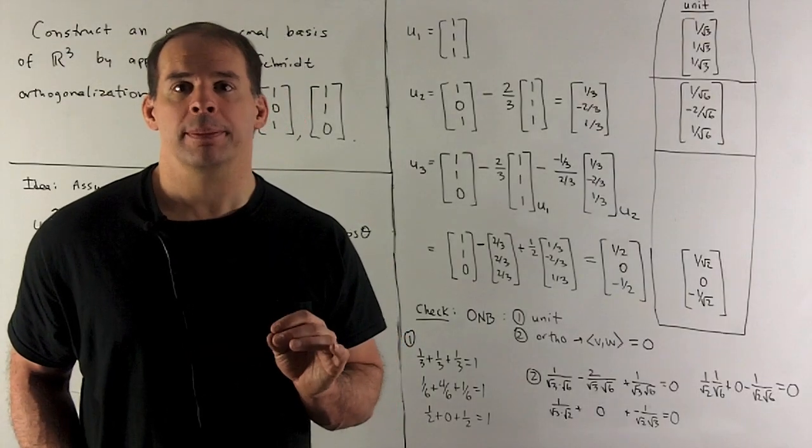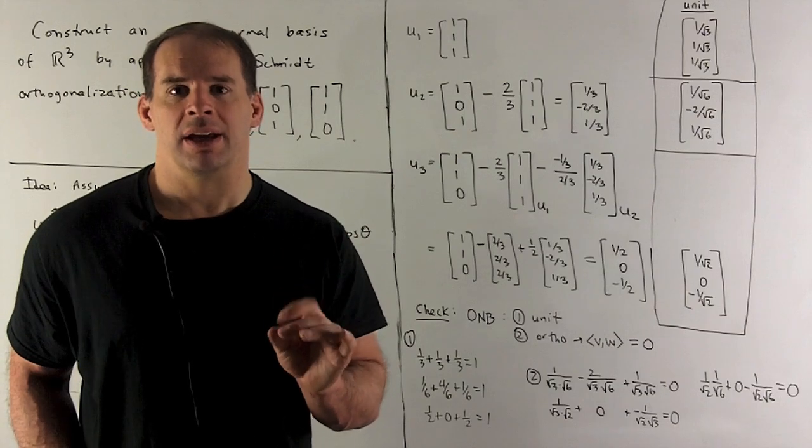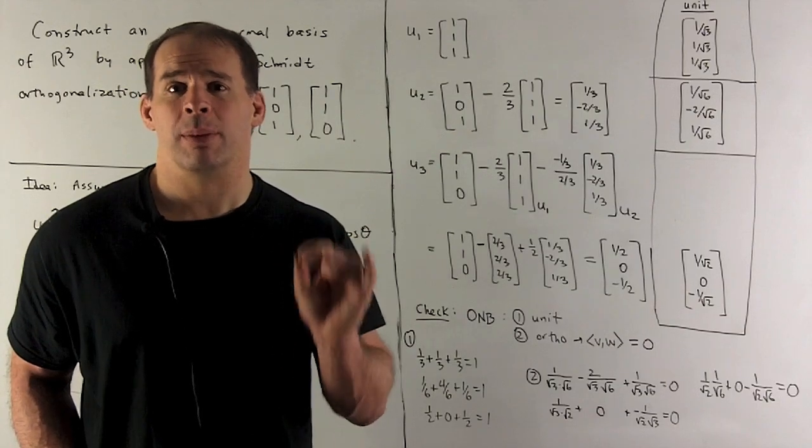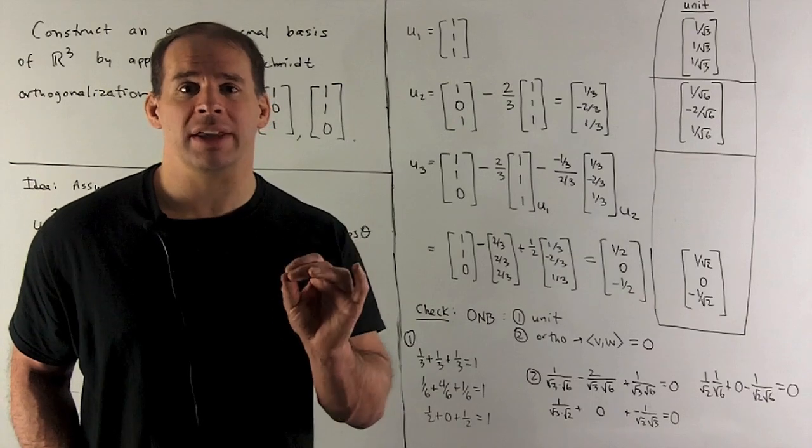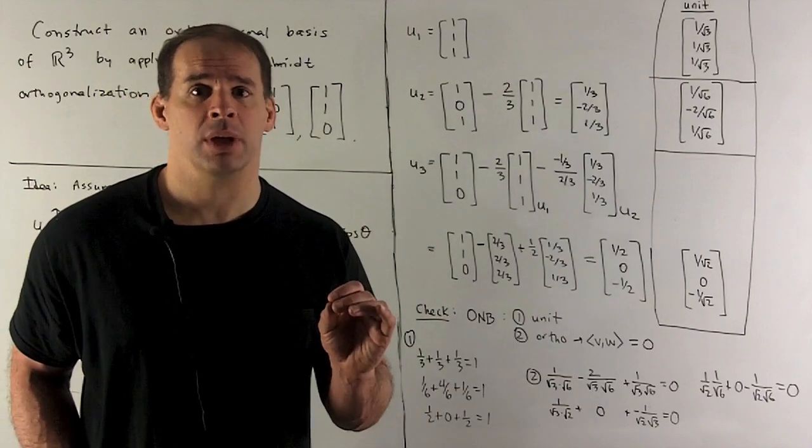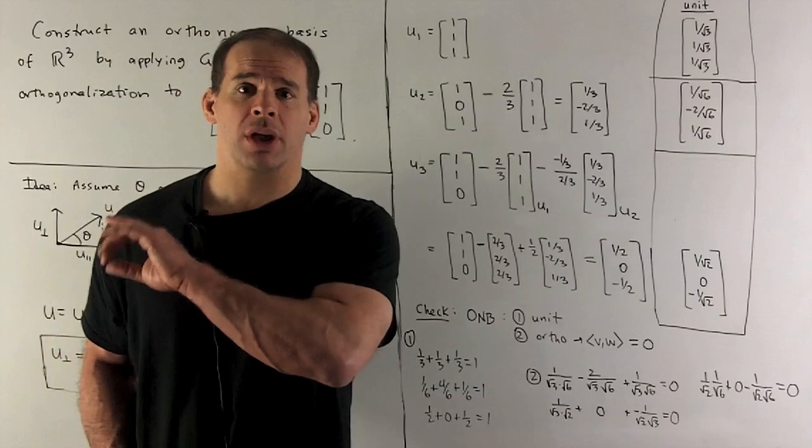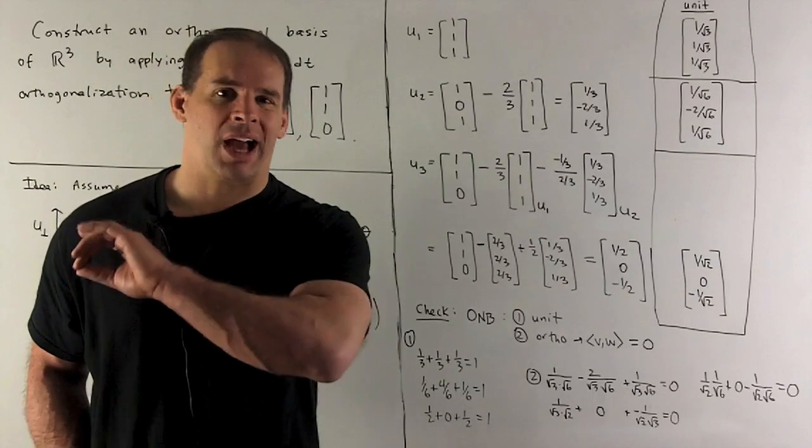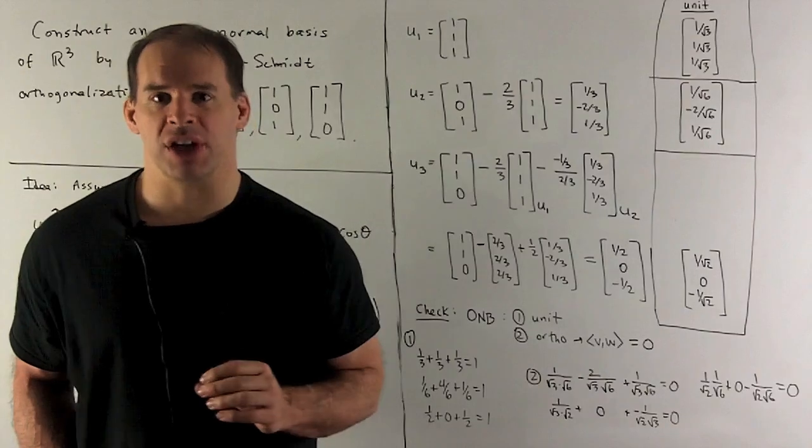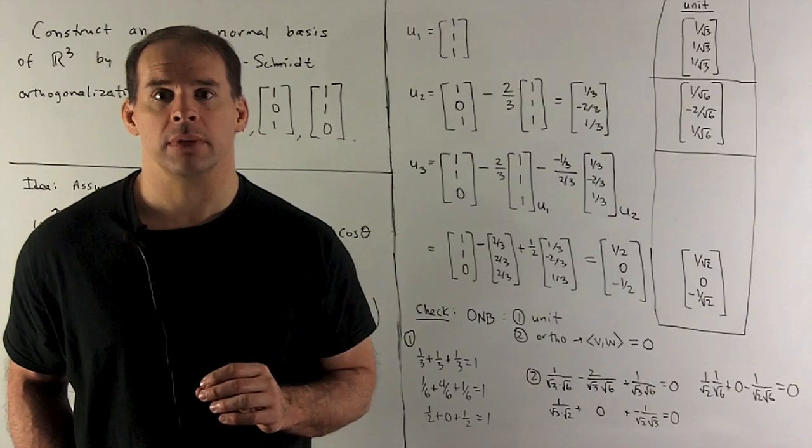To apply Gram-Schmidt, we just take the vectors we're given, and we subtract off successive parallel parts. The parallel parts are going to be to only the vectors that come out of the Gram-Schmidt process. Once I put one of our vectors through the process, we never revisit it. So once you've applied Gram-Schmidt, you'll pretend that vector doesn't exist anymore.